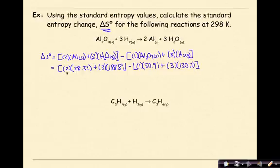Now what I'm going to do is go through the process of multiplying, adding, and subtracting to find my overall delta S value. I find that when I take my products and I multiply and I add them together, I get 623.04